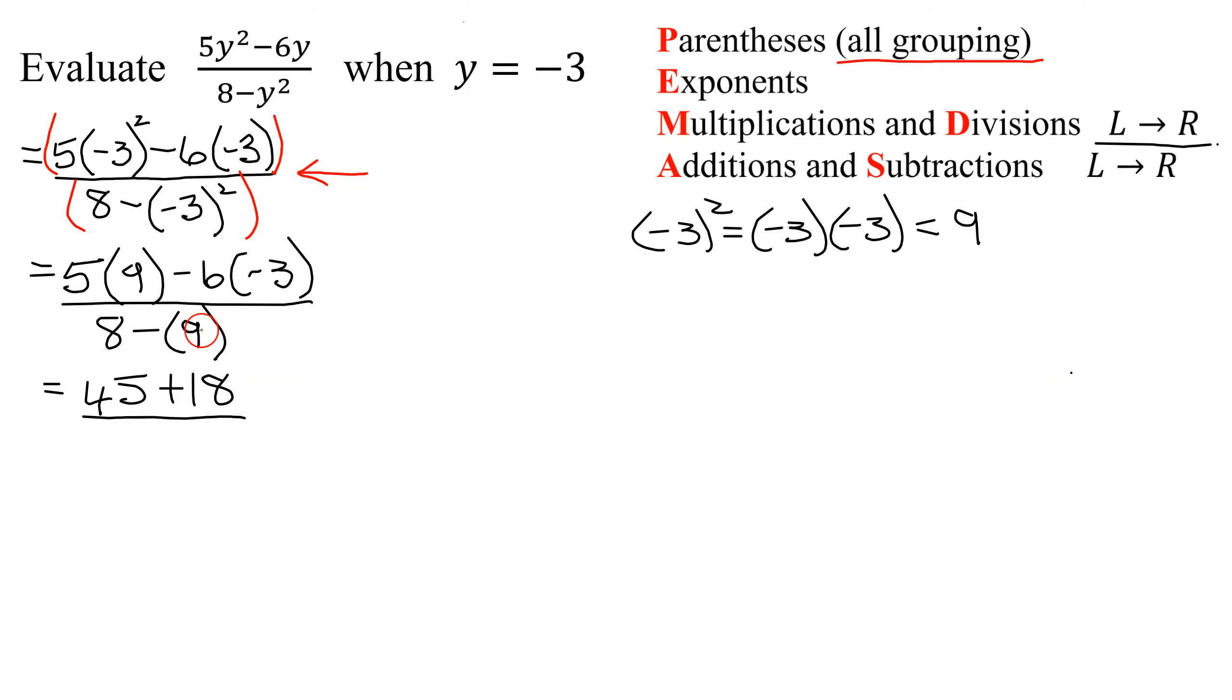All divided by, do I have any multiplications here? No. So I really don't need that set of parentheses. So I just have 8 minus 9. So my numerator is 45 plus 18, which is 63, divided by 8 minus 9 is negative 1.